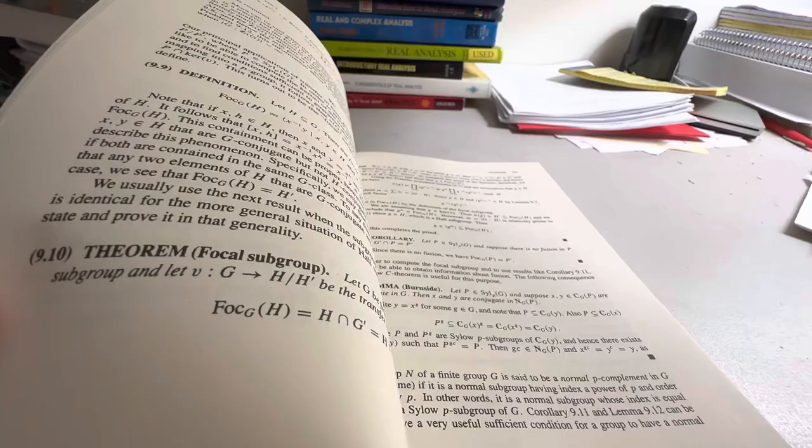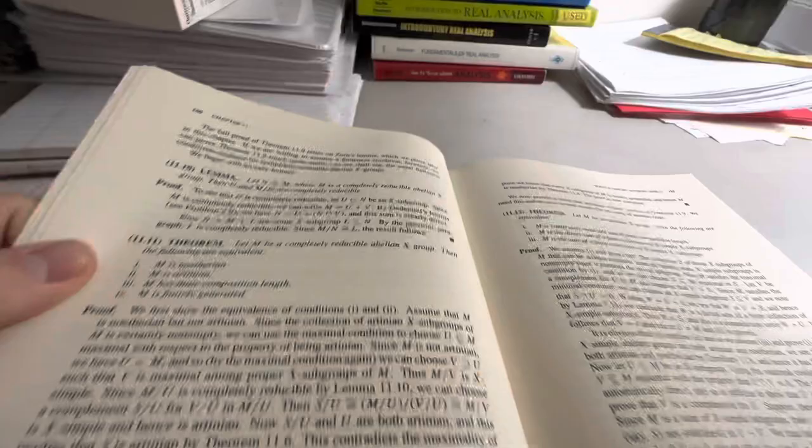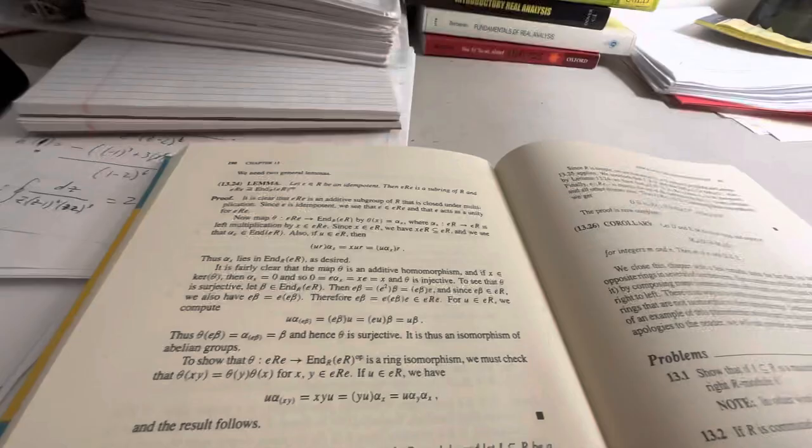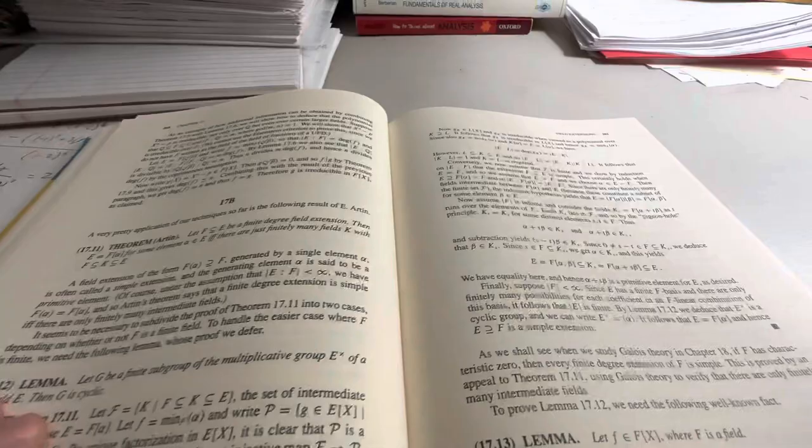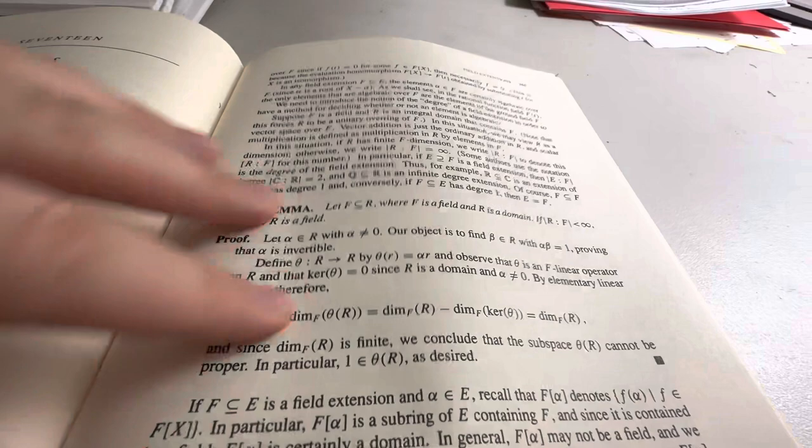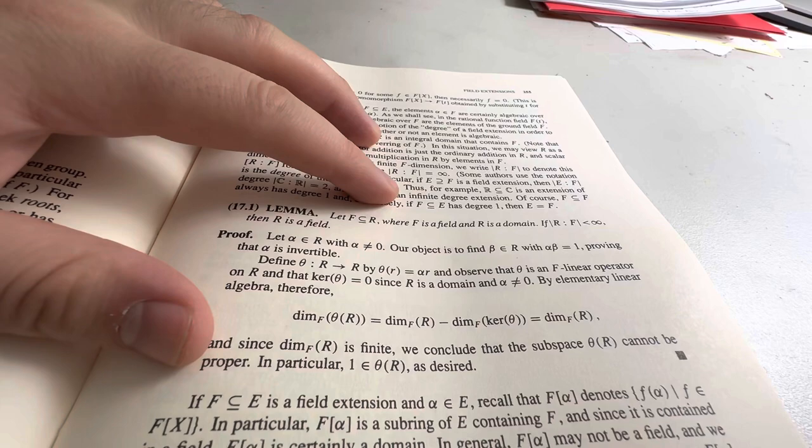Okay. We're in uncharted waters now. Noetherian and Artinian. Module theory. How about we skip ahead to, like, field theory or something? Chapter 13. We need to skip further. Ah. Chapter 17. My favorite chapter. F is a subset of R. I think it's a field, right? So, F is a subfield of R. F is a field. R is a domain. If the dimension of R over F is finite, then R is a field.